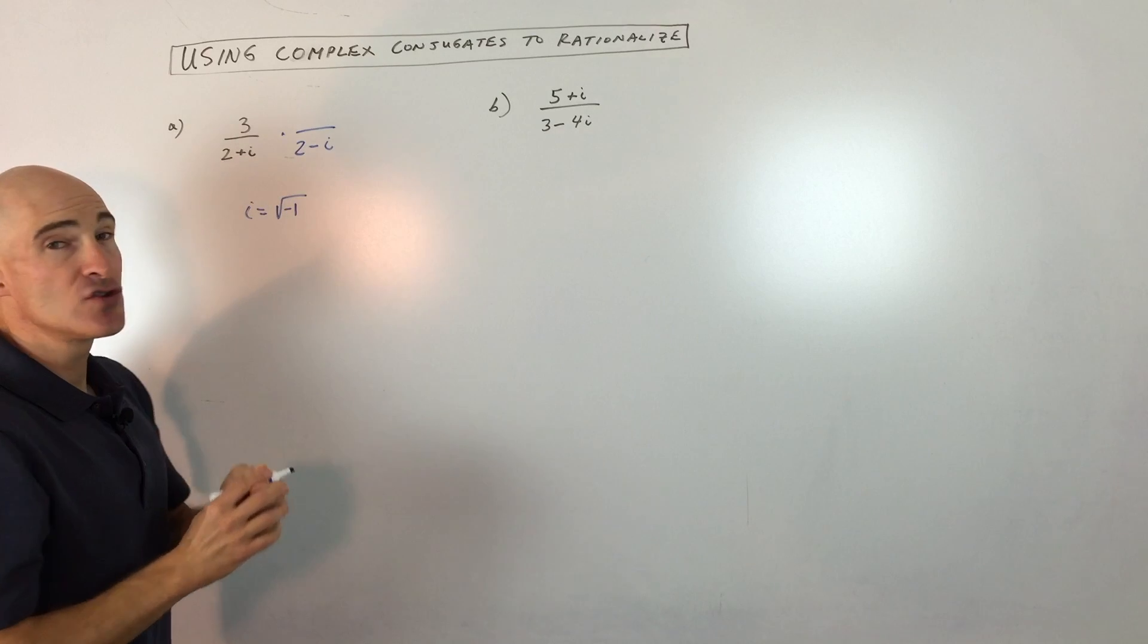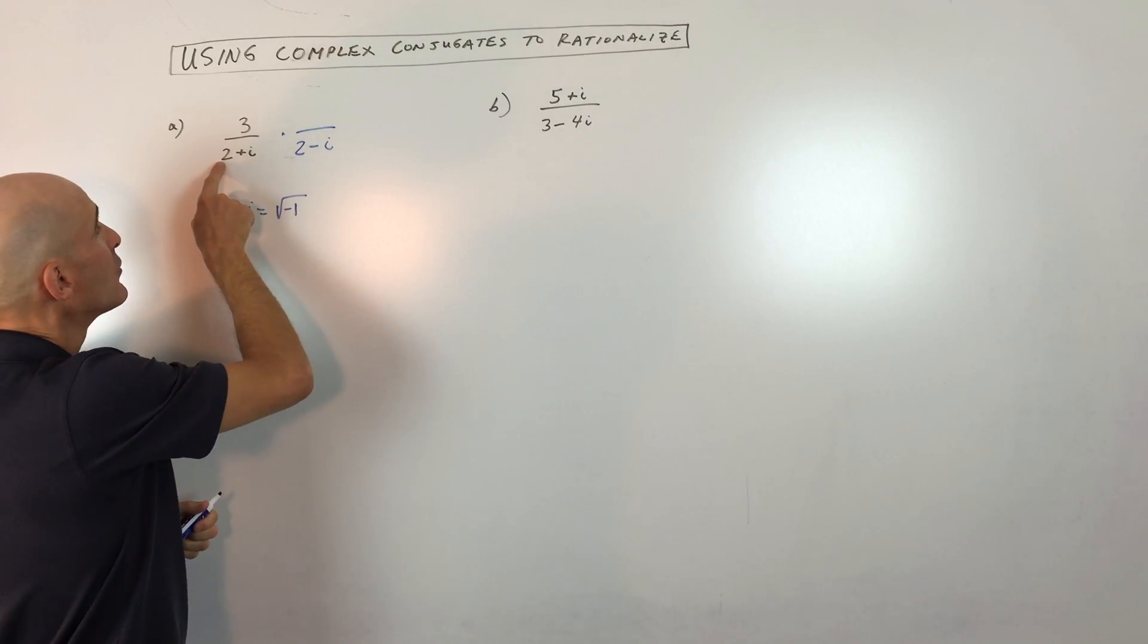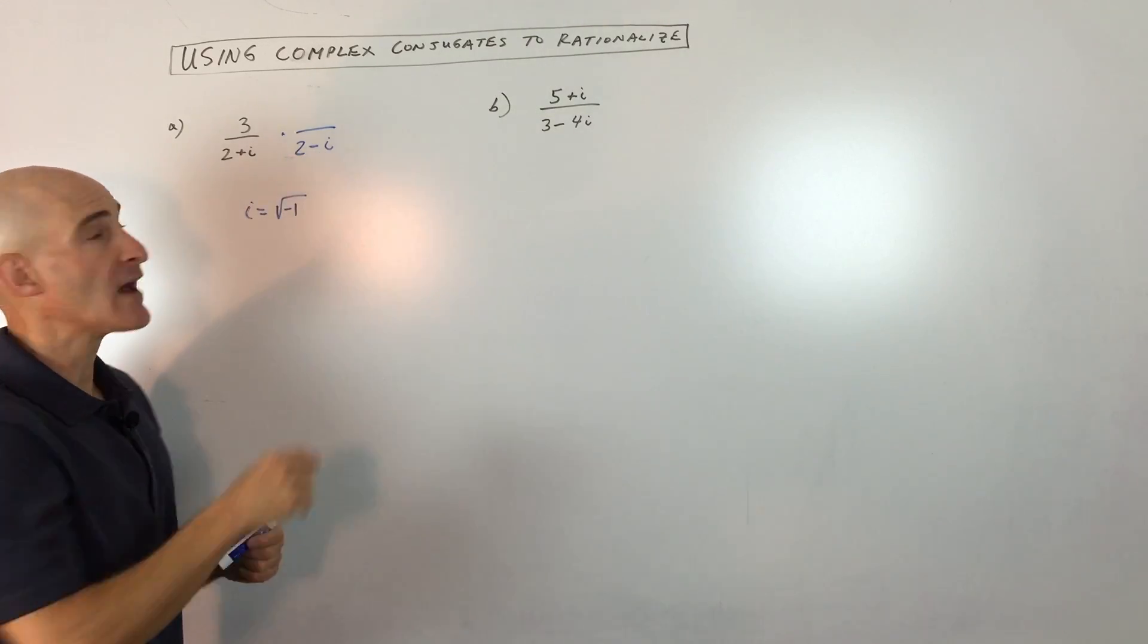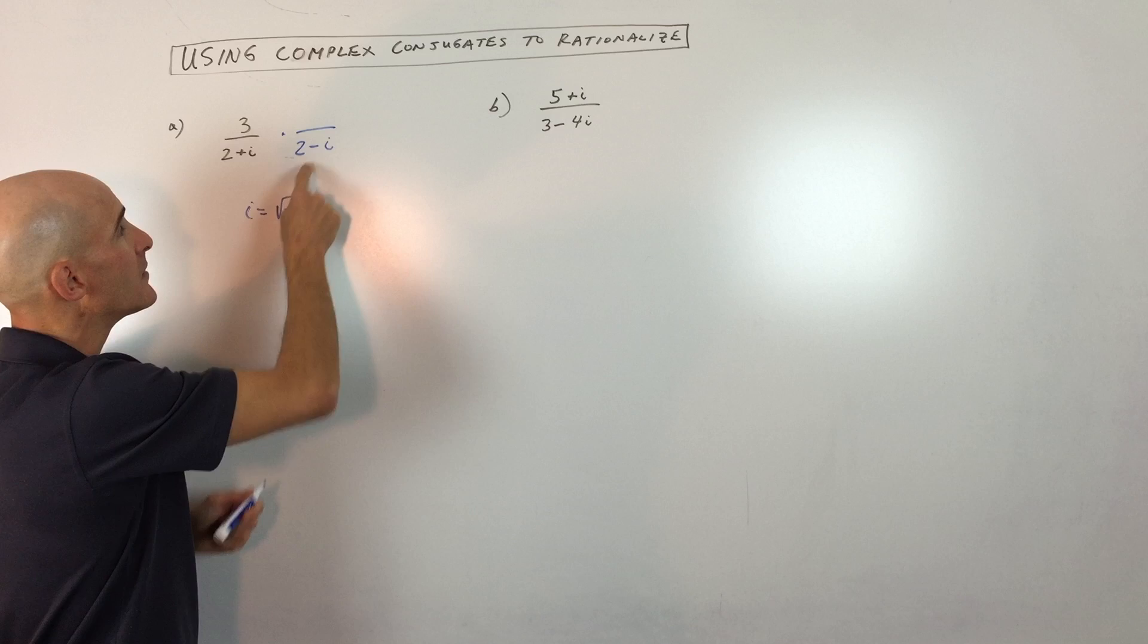Basically what students do sometimes when they make a mistake is that they'll say, okay, that's positive two and positive i, let me make this negative two and negative i. You don't want to do that. You just want to change the sign in between.